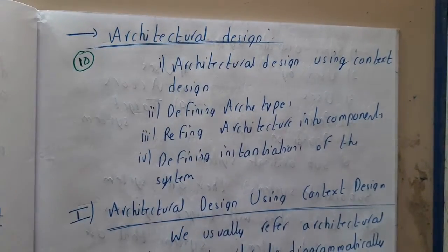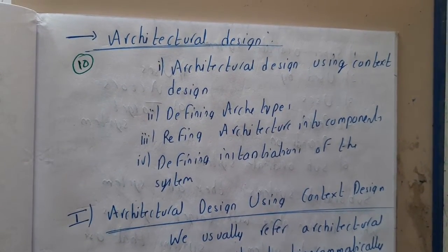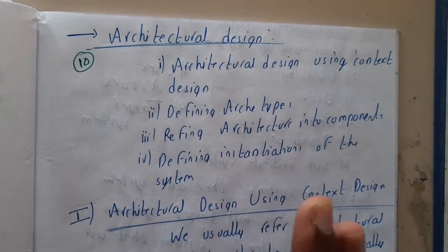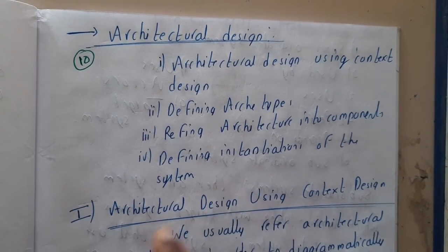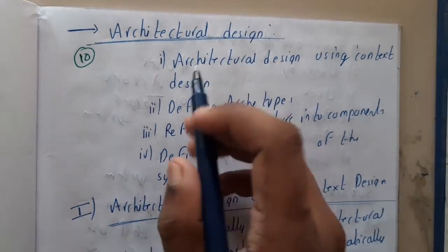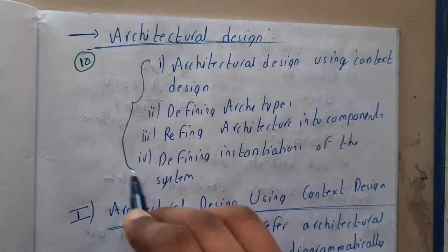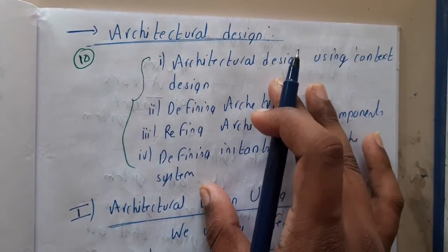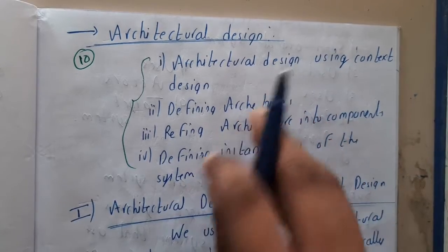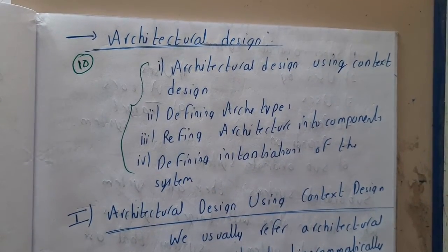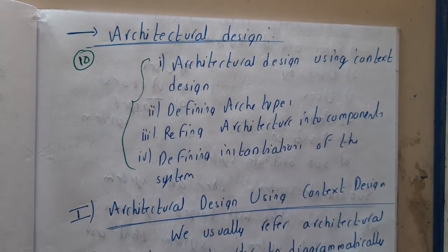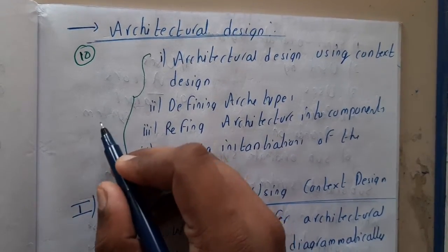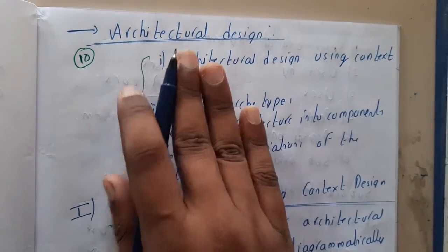So in this series, around four to five lectures we'll be discussing about architectural designs. There are popularly four architectural designs. Basically these architectural designs are some kind of hybrid versions of the architectural styles which we have seen.